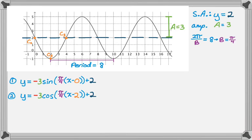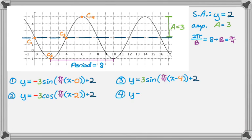Moving one more increment gets us to a maximum, which means it's a positive cosine. So that's the basics of how it's done.